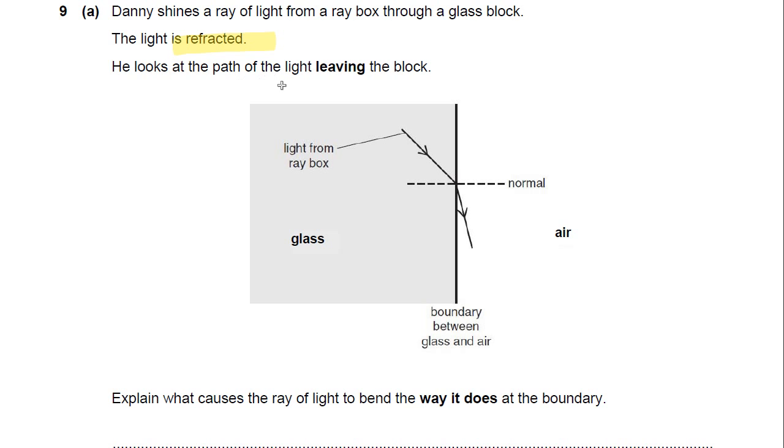He looks at the path of the light leaving the block. Let me just make sure you understand what you can see here. You can see that this is the ray of light inside some glass. This is an imaginary line, which is called a normal, always at right angles to a surface, to a boundary, we say. And this is the refracted ray here.